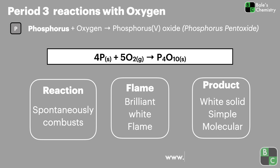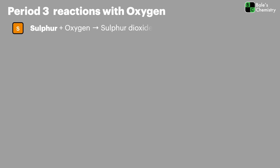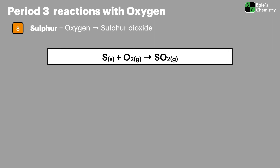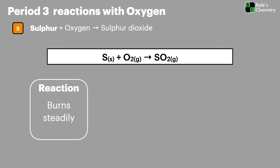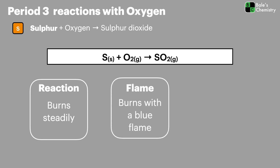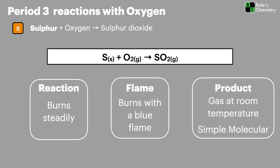The last one to look at is sulfur. Sulfur reacts with oxygen to form sulfur dioxide. It burns steadily when heated with a lovely blue flame. At room temperature, the sulfur dioxide produced is a gas with a simple molecular construction.